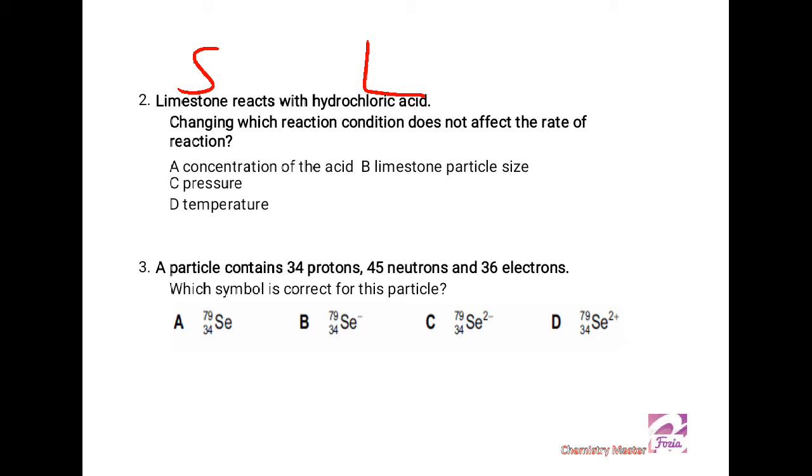Here the conditions are: concentration of the acid will affect it because it is one of the important reactants. Limestone particle size also greatly affects the rate of the reaction. Temperature is the main determining factor because every chemical reaction takes place at its own standard temperature. Only one condition is pressure - because none of the reacting species are in their gaseous physical state, changing the pressure will not affect the rate of the reaction.